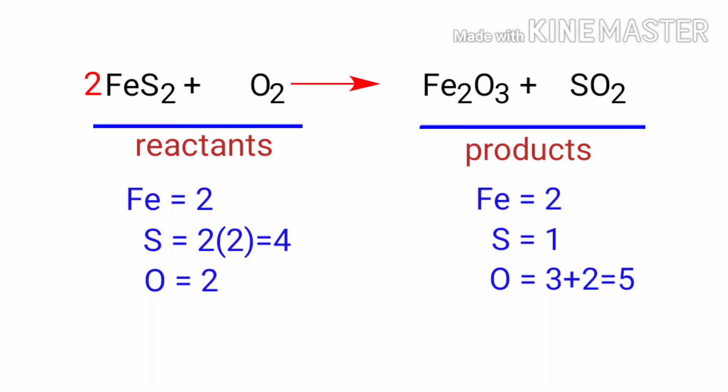The Iron atoms are balanced. Now we need to balance the Sulphur atoms. To do this, we need to put a coefficient of 4 in front of SO2.